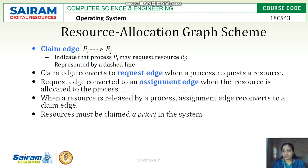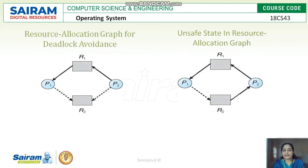We have seen in the last video the Resource Allocation Graph with request edge and assignment edge. Now the Resource Allocation Graph is introduced with one more edge called the claim edge. If process Pi needs resource Rj, first a claim edge is created. The resource is then compared — if it is not requested or assigned by any other process, the claim edge is converted to a request edge, and if there is no assignment for Rj, the request edge is converted to an assignment edge.